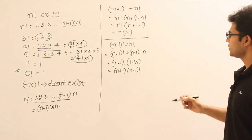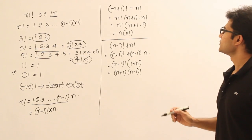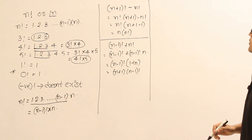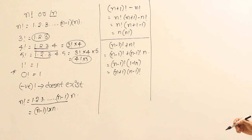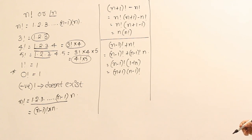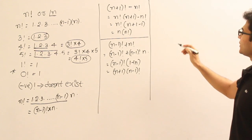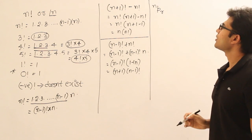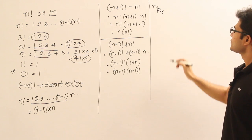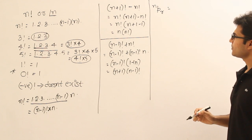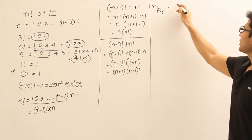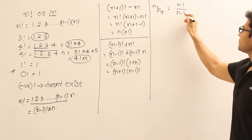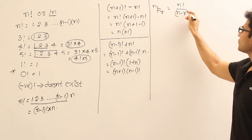We shall come across these manipulations once we get into the problems. Let's first focus on the formulas. Another popular formula is NPR. The notation NPR expands as: n factorial divided by (n minus r) factorial.